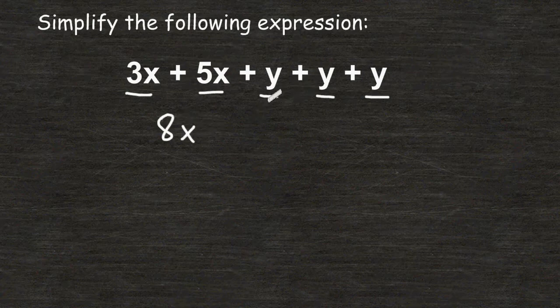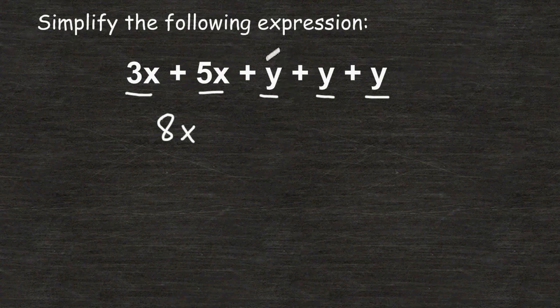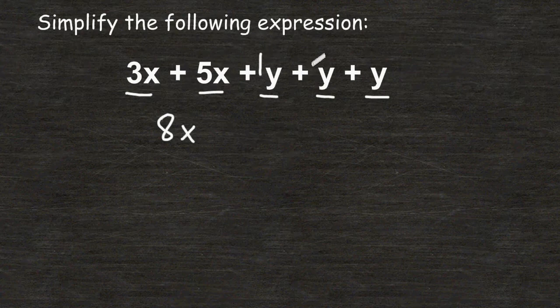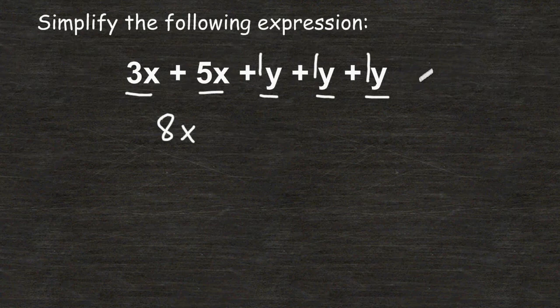Now, these y terms are all like terms, and there is no coefficient in front that we can see, but we must understand that there is really a number 1 in front of each one of these y's. But in algebra, if there is only one of a variable, we just write that variable one time. So we are going to add 1y to 1y to 1y, which is a total of 3 y's.